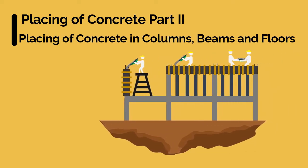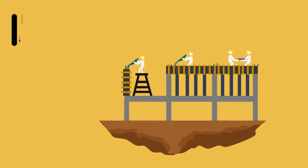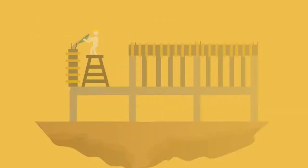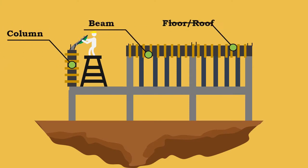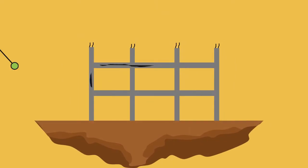Placing of Concrete Part 2: Placing of Concrete in Columns, Beams and Floors. The columns, beams and floors or roofs are the important structural elements for any building. The concrete should be placed perfectly at these places. If not, it will lead to structural failure.